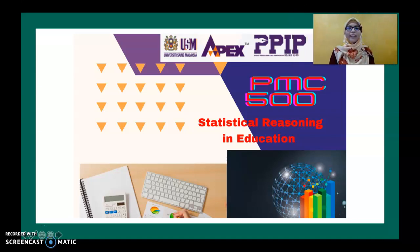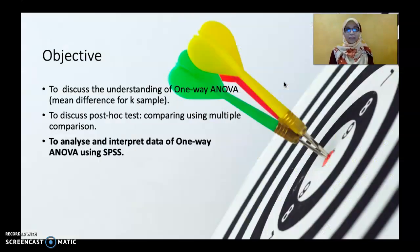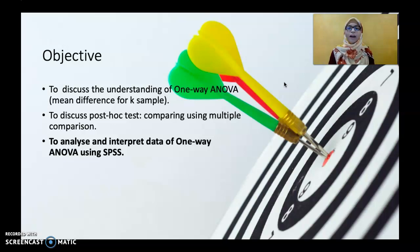Assalamualaikum warahmatullahi wabarakatuh and hi everybody. Welcome back to PMC 500, Statistical Reasoning in Education. We are going to discuss again Analysis of Variance or ANOVA. I am Dr. Nur Asniza Ishaq. Our objective for this lecture is the third objective: to analyse and interpret data of one-way ANOVA using SPSS. We have covered the first objective on what is one-way ANOVA, discussed the post hoc test using multiple comparisons, and now we look at how to analyse and interpret data of one-way ANOVA using SPSS.